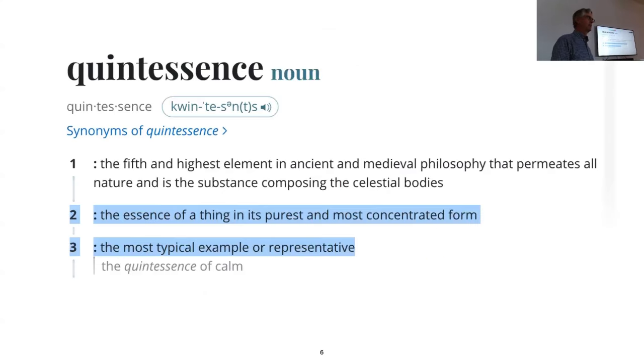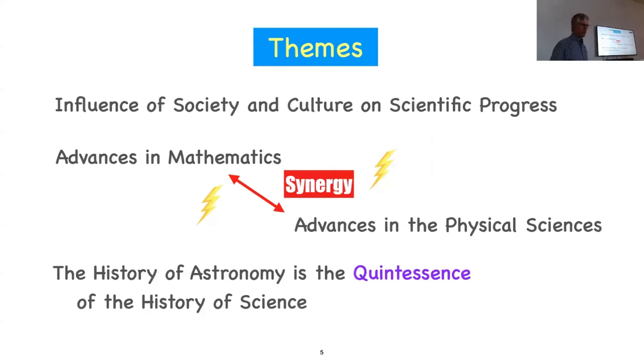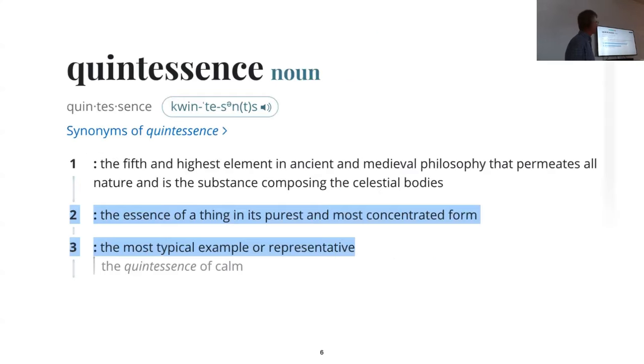Another important theme is the synergy between advances in mathematics and advances in the physical sciences. We're going to look at some very concrete examples of how that worked. And then finally, I want to make the case that the history of astronomy, at least up until the scientific revolution, is the quintessence of the history of science. For the ancients, the quintessence was the fifth and highest element in ancient and medieval philosophy that permeates all nature and is the substance composing the celestial bodies.